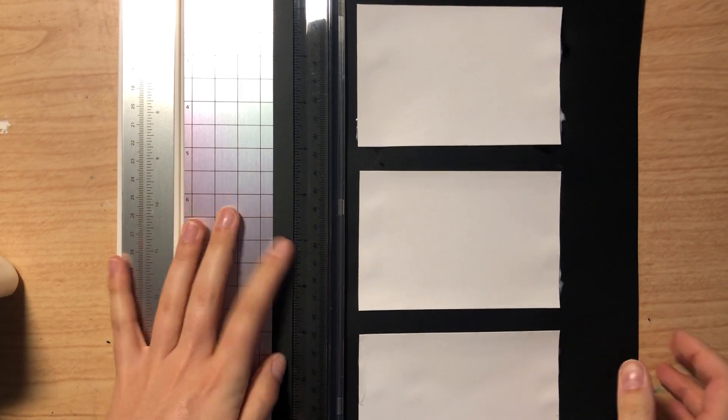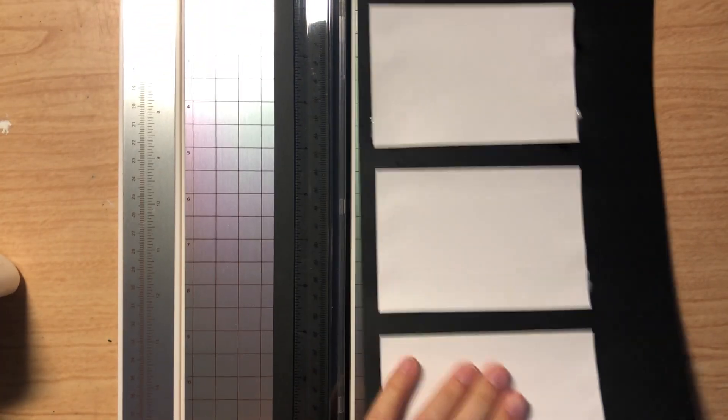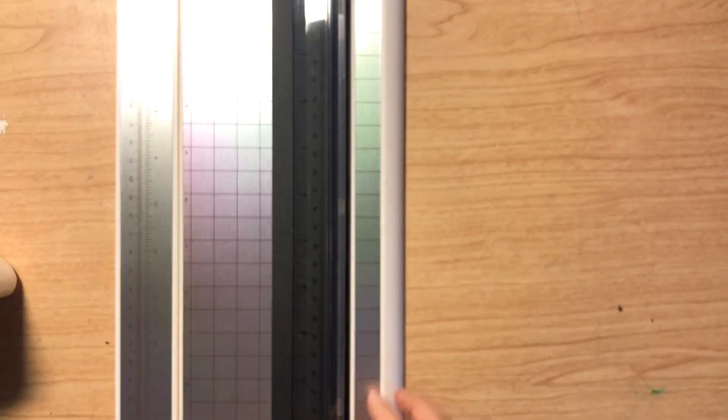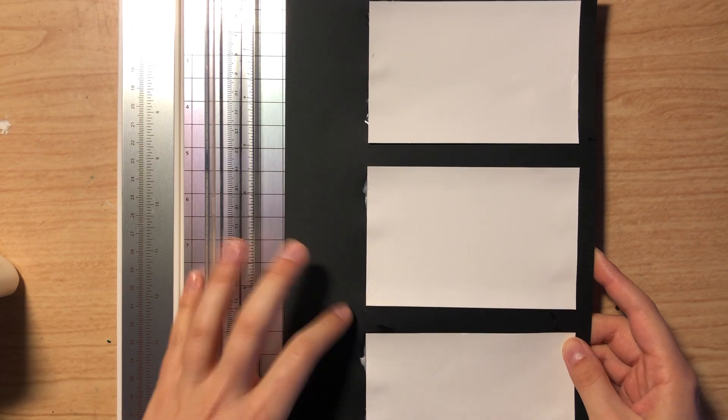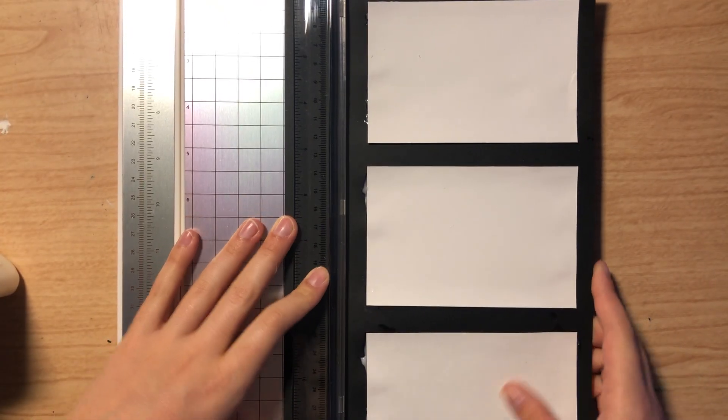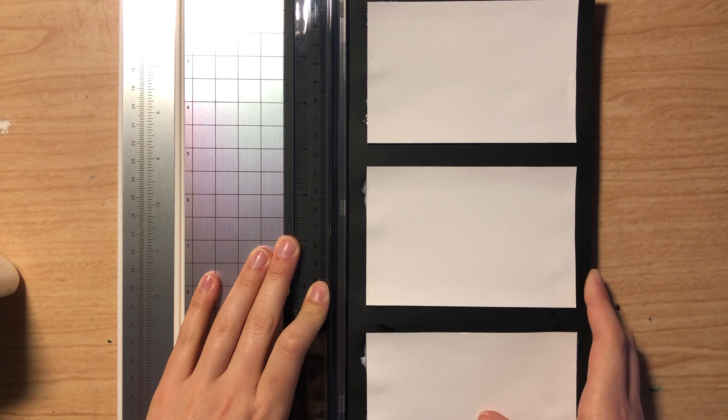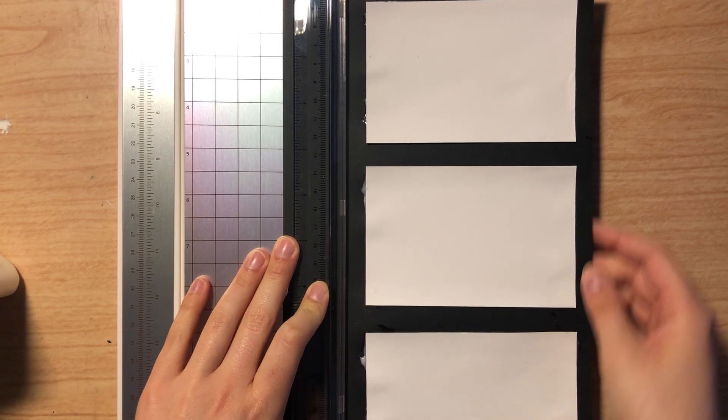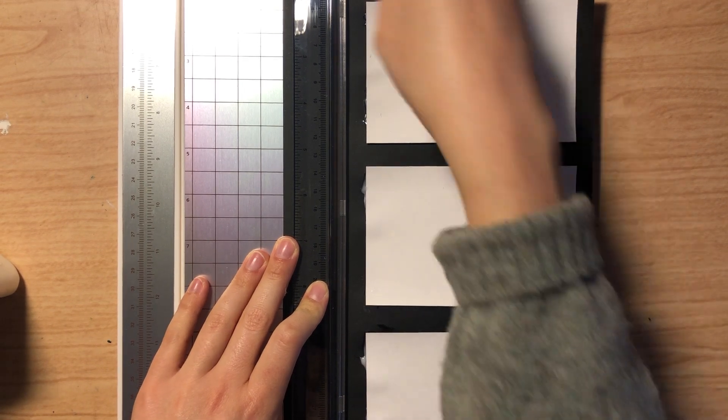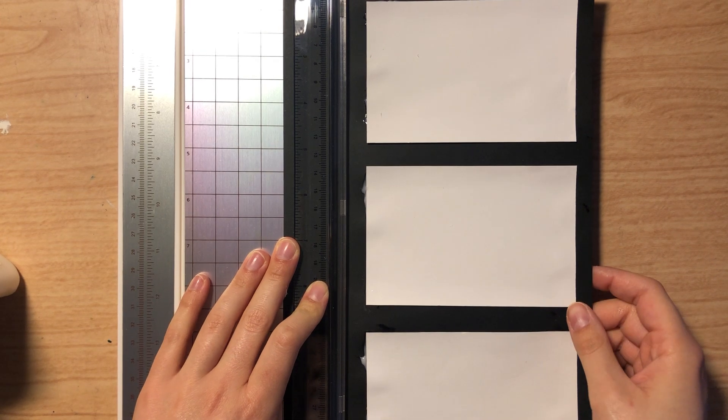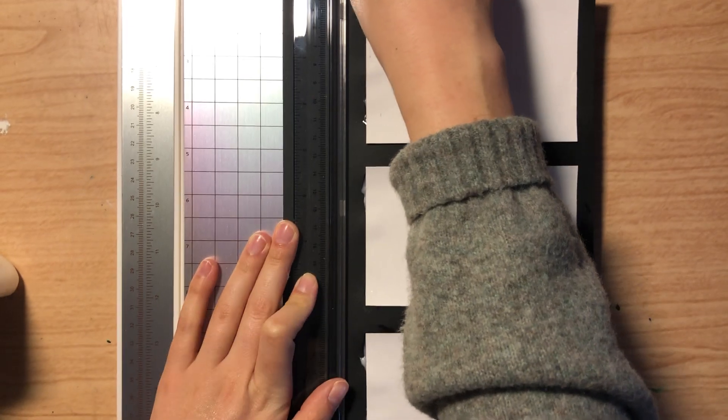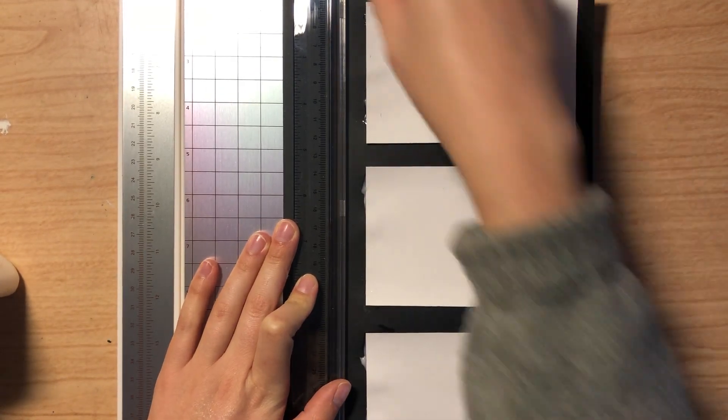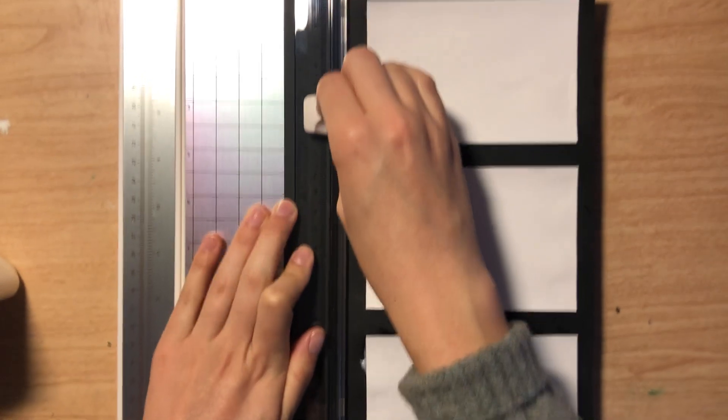There we go, that's one side. Flip it over, do the other side. It's always good to have too much space because then you can cut it down more, but if you cut it too short the first time, then you kind of can't do much about that.